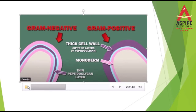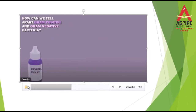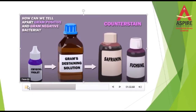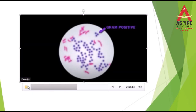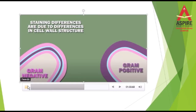Gram-negative bacteria have a much thinner cell wall consisting of a single layer of peptidoglycan. This layer is sandwiched between the plasma membrane and an outer membrane. We can differentiate gram-positive from gram-negative bacteria by dyeing with crystal violet and then washing with a decolorizing agent. Gram-positive bacteria retain the crystal violet dye and appear purple, while gram-negative bacteria are then stained pink with a counterstain.